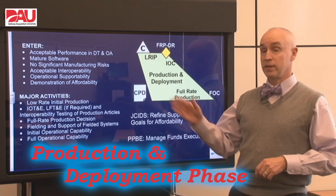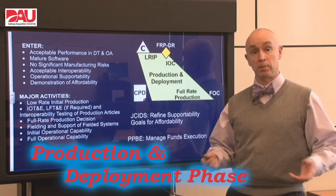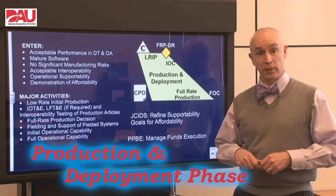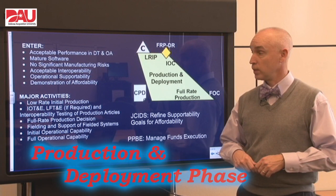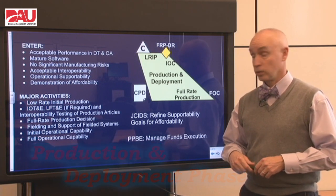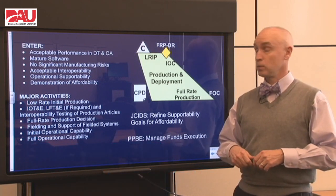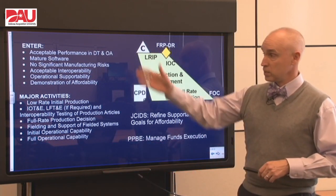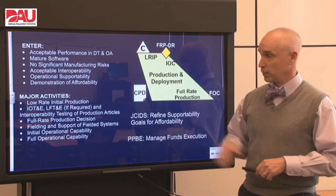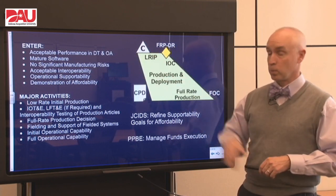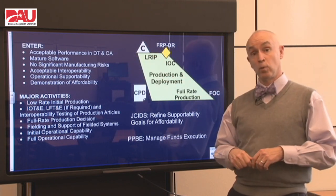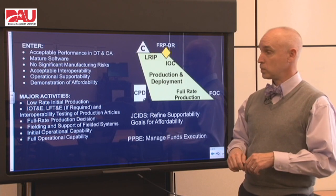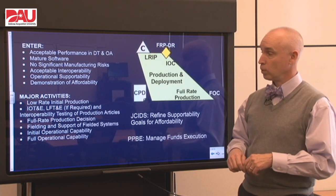In order to enter the phase, we have to have acceptable performance in the testing that we did in the previous phase. We certainly don't want significant manufacturing risks anymore. We also want to see acceptable interoperability, supportability, and affordability. All of those things are going to be checked at Milestone C before we go forward.